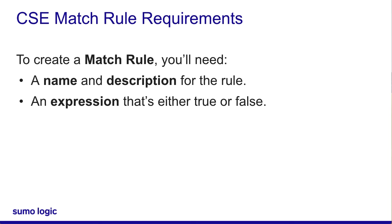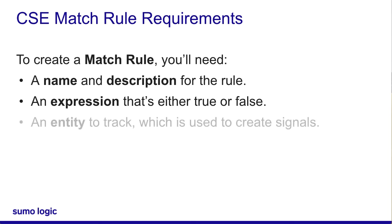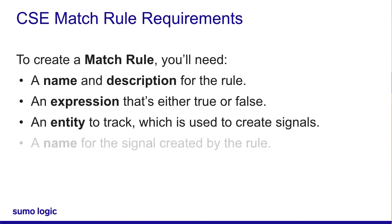So I write an if statement to check whether that event ID is there. You'll also need to configure the signal that will be created if the rule is triggered. First, the entity, which could be IP address, hostname, or username. You'll also configure the name of the signal that will be created. For my rule, the entity might be hostname, since we'll be detecting whether that host is sending logs, and the signal would be named something like Windows Log Service Shutdown.